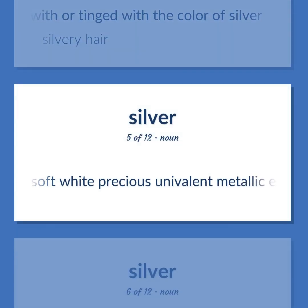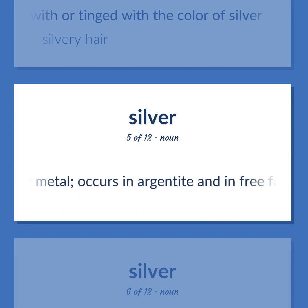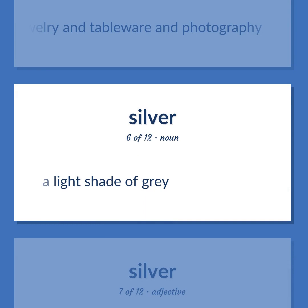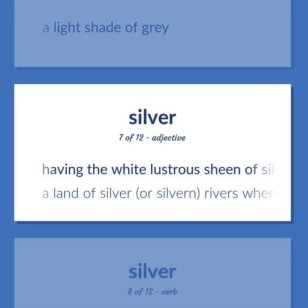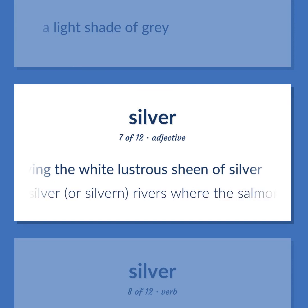Silver (element): a soft white precious univalent metallic element having the highest electrical and thermal conductivity of any metal; occurs in argentite and in free form; used in coins, jewelry, tableware, and photography. Silver (color): a light shade of grey. Silvery (adj): having the white lustrous sheen of silver — 'a land of silver, or silvern, rivers where the salmon leap.'